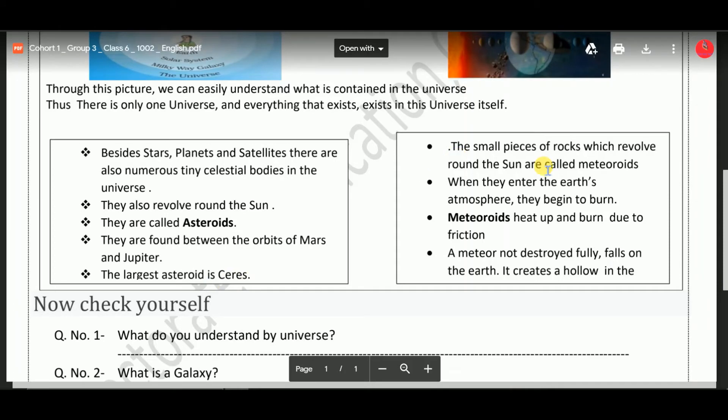The small pieces of rocks which revolve around the sun are called meteorites. When they enter the Earth's atmosphere, they begin to burn. Meteorites heat up and burn due to friction. A meteor not destroyed fully falls on the Earth and it creates a hollow in the Earth itself.